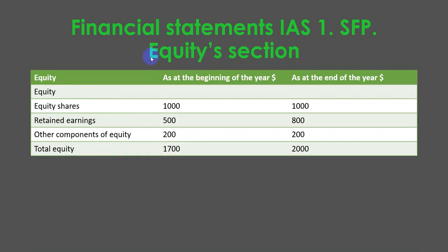Here is the equity section of the statement of financial position. As you can see, the equity section contains equity shares, retained earnings, and other components of equity, with a total calculated.